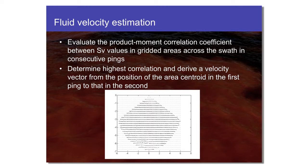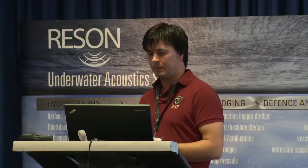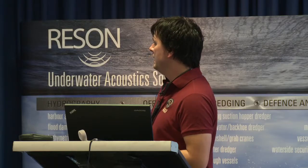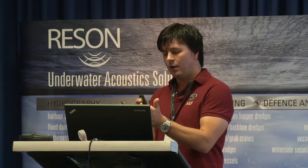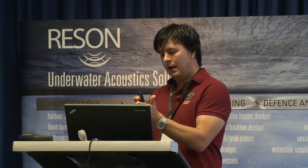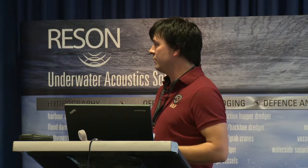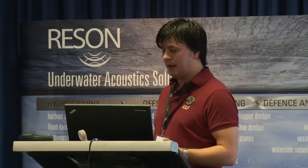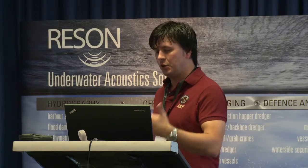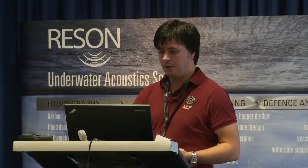By gridding and looking at the differences between consecutive pings, we can begin to track essentially blobs of scattering volume strength through time. Once we develop a correlation matrix based on matching those scattering volume strength blobs over time, we're able to get a velocity vector between two subsequent pings of the sonar.